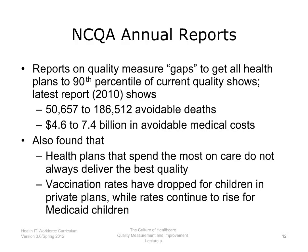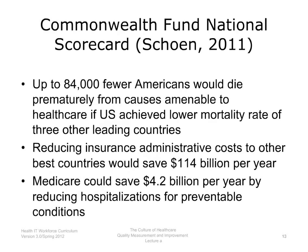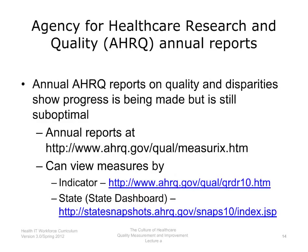Studies by Schoen and colleagues with the Commonwealth Fund found that quality of care for patients with chronic diseases is no better — and in many ways worse — in the United States than in other developed countries. Their most recent national scorecard found that up to 84,000 fewer Americans would die prematurely if the U.S. achieved the lower mortality rate of three other leading countries. Reducing insurance administrative costs to the level of other best countries would save $114 billion per year, and Medicare could save $4.2 billion per year by reducing hospitalizations for preventable conditions. The Agency for Healthcare Research and Quality (AHRQ) also puts out annual reports showing progress is being made but is still suboptimal.